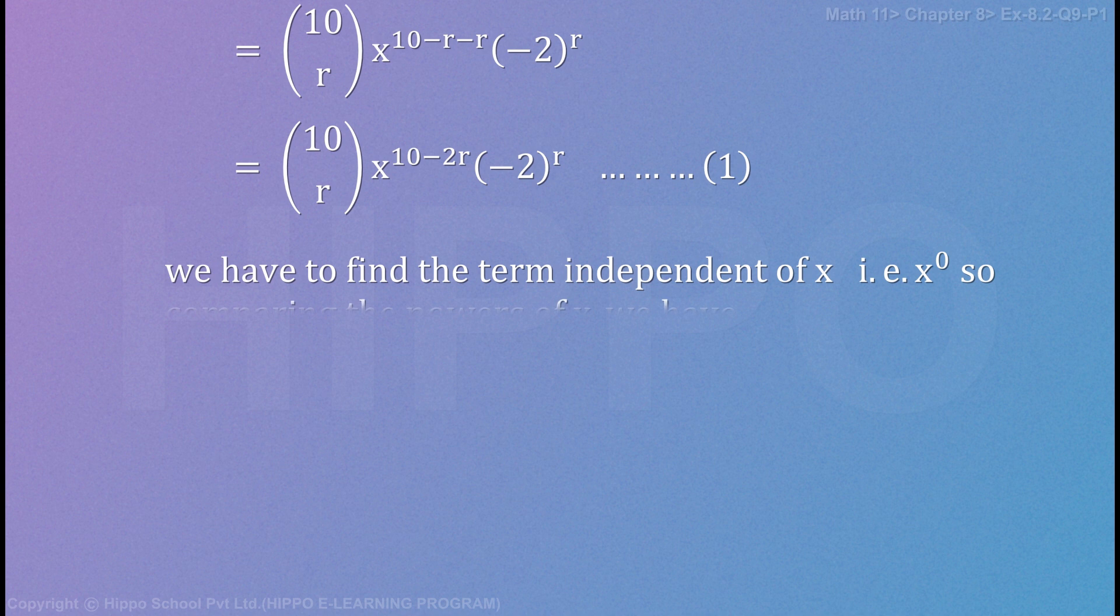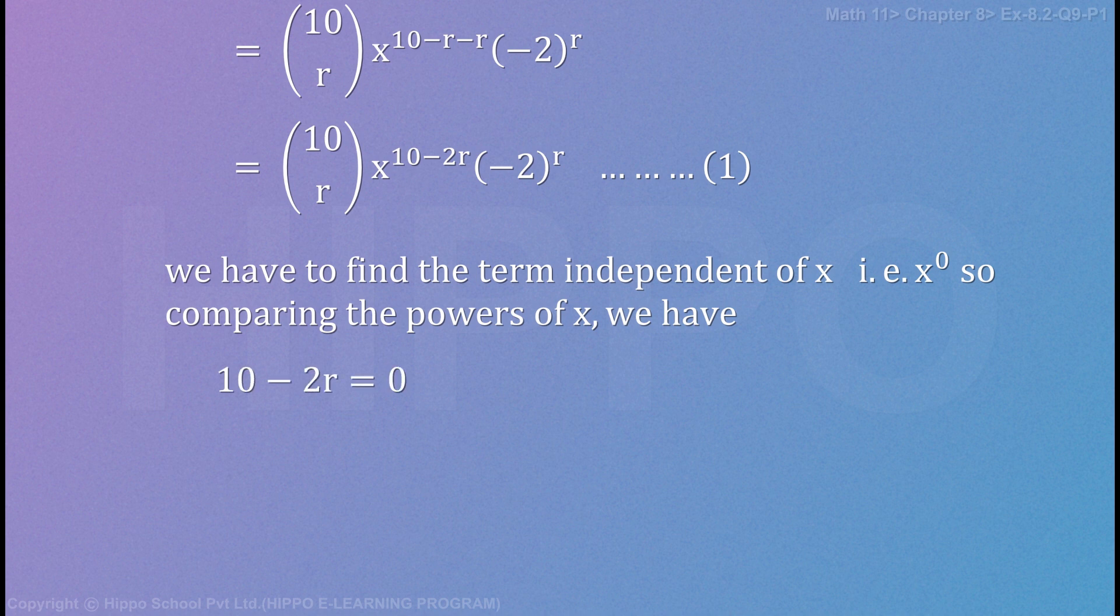We have to find the term independent of x, i.e. x power 0. So comparing the powers of x we have 10 minus 2r equals to 0, so 10 equals to 2r, r equals 5. Put in 1.